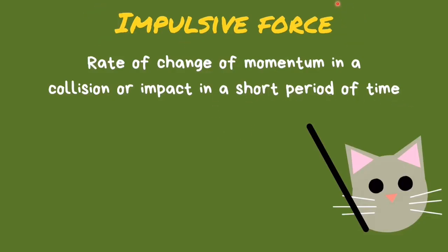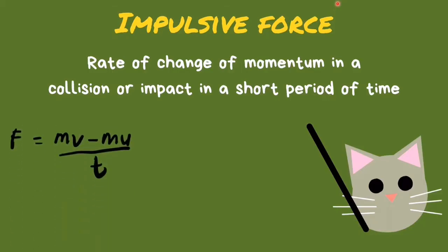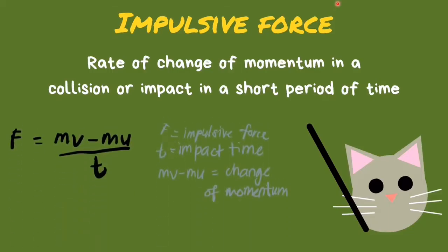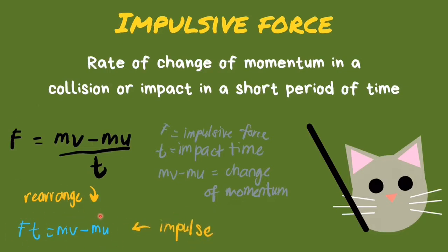The formula for impulsive force is F equals mv minus mu divided by time. Now, if we rearrange this formula, we'll get something like this, and that would be the formula for impulse.